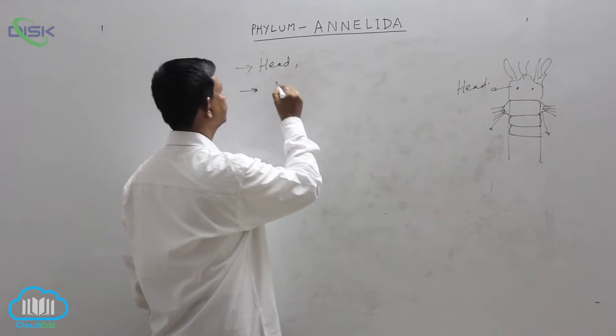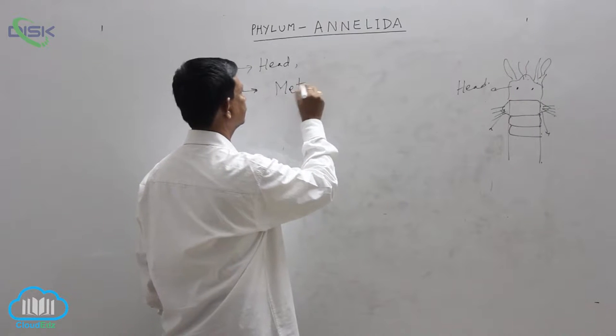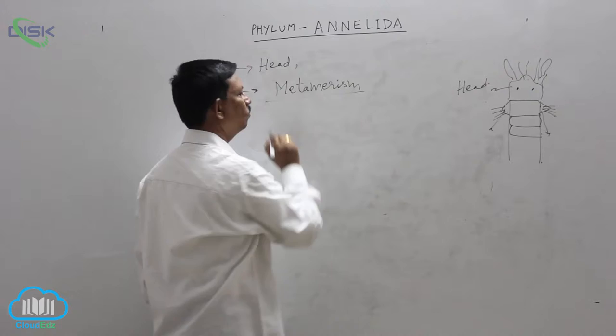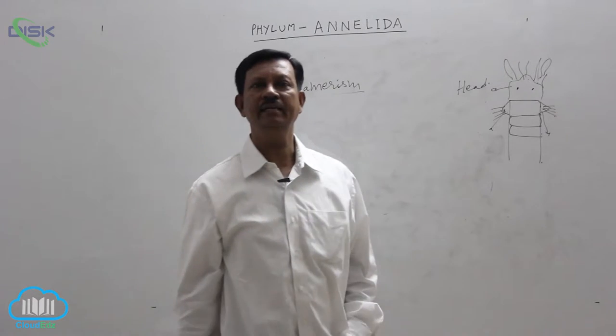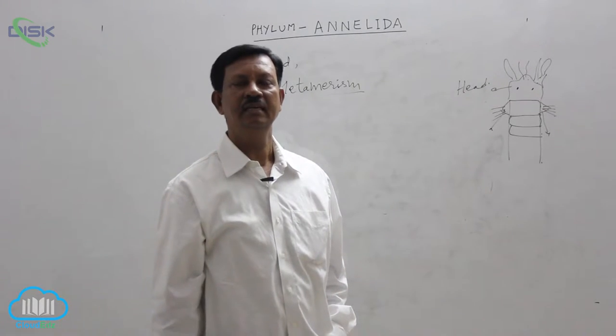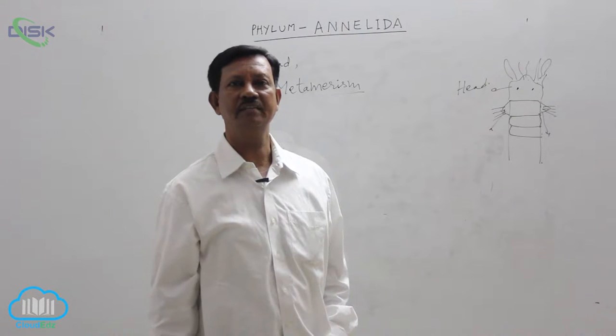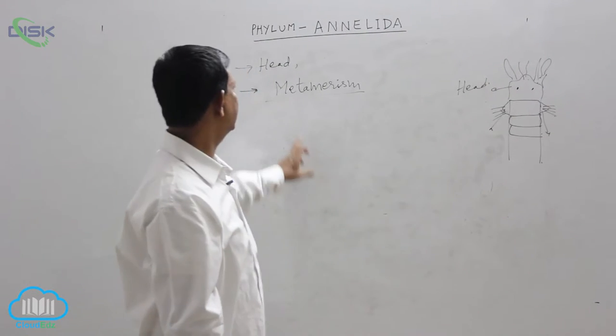Metamerism. What is metamerism means body is divided into different segments. These segments division is externally as well as internally. This is the first time such segmentation is present in the phylum.